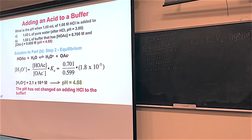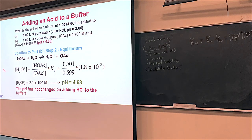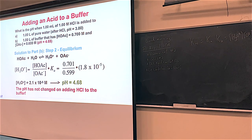A couple of things here: adding strong acids and strong bases to buffers is the double ICE method. The first ICE table accounts for the fact that strong acids and strong bases are 100% product-favored — you find the new concentrations. Then you use those new concentrations; often you can ignore ±X and just solve for hydronium. Minus log of hydronium equals pH. Usually the pH change is pretty small — here it was zero. That wasn't a small amount of HCl, yet it didn't even phase the buffer. Still 4.68.